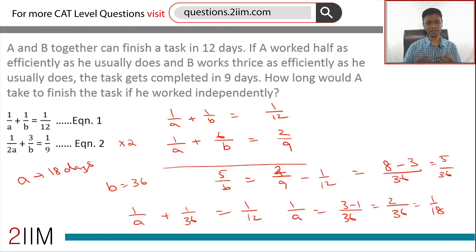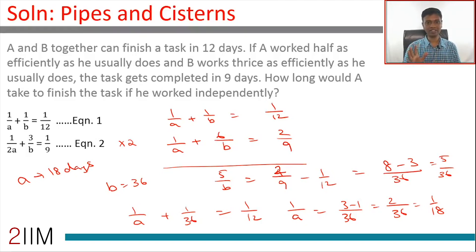These kinds of questions are very useful to kind of wind our head around the reciprocal idea. If A takes 'a' days, then A can complete 1/a of the task in one day. If B takes 'b' days, then B can complete 1/b of the task in one day. That is the starting step for all questions on this topic. Just keep that in mind: if someone can do a task in 5 days, in one day the person can do 1/5th of the task.